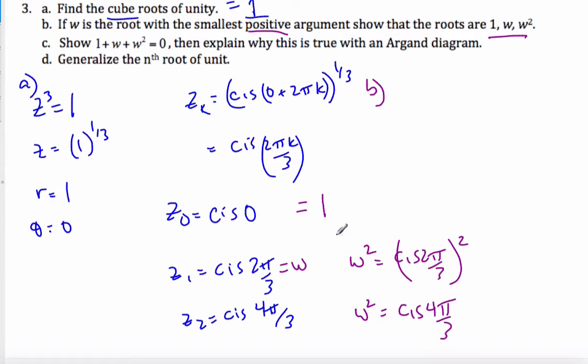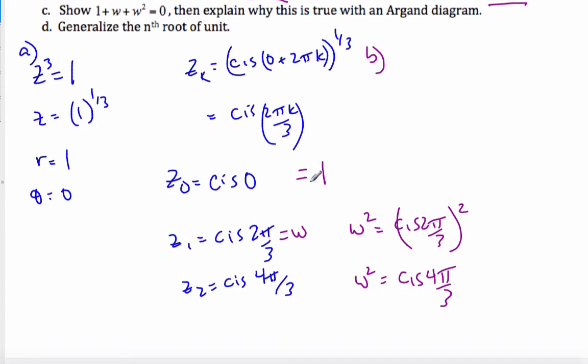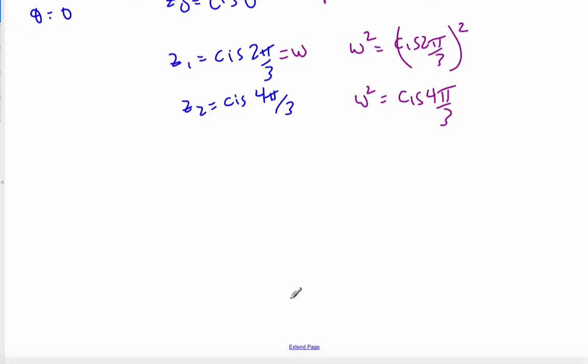Okay, so C part now says, show that the three roots added equals 0. And explain why this is true with an Argand diagram. Well, if I consider this, it wants me to show that 1 plus w plus w squared equals 0. That's what I want to show. Well,